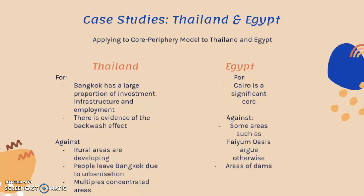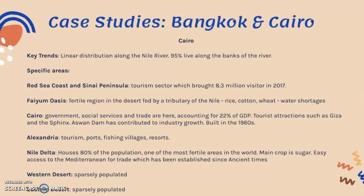Now looking at Egypt and how voluntary internal migration and the core-periphery model apply. If you look at Egypt's population distribution map, there is a very clear linear distribution along the Nile river — approximately 95% of the population lives along the banks of the river.